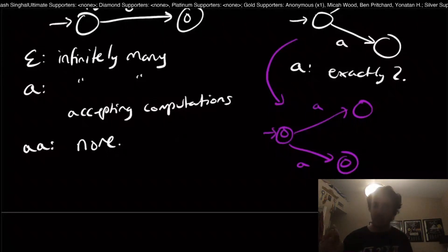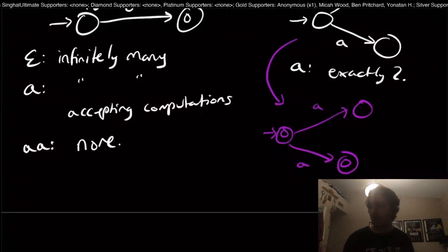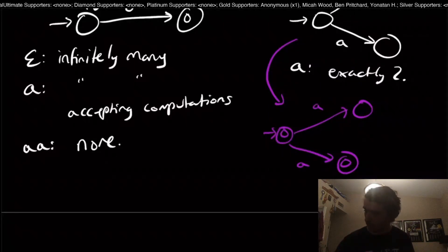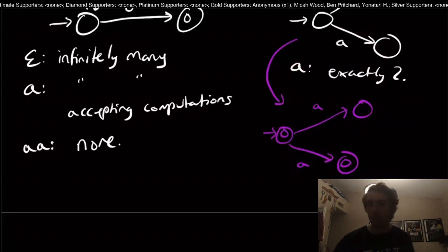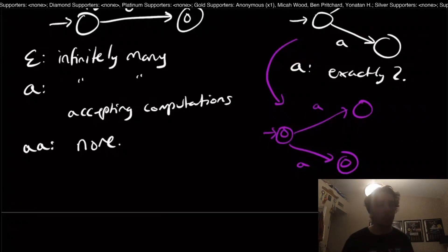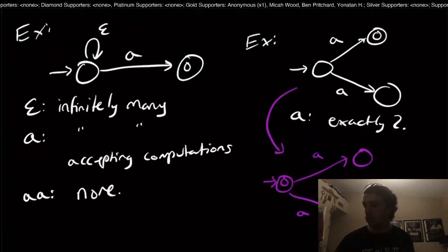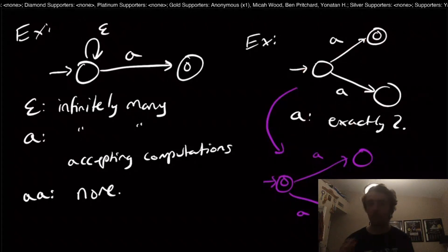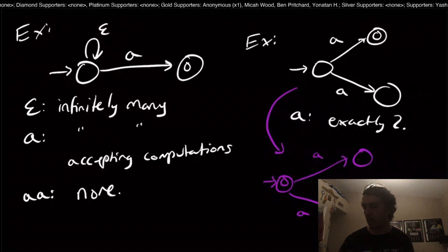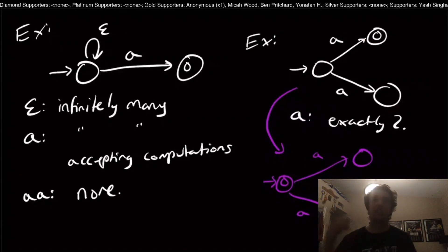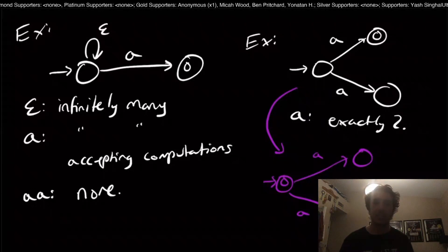You may be thinking, DFAs have closure in the complement and NFAs don't, so therefore, they cannot possibly be the same. But that's not true. Just because this particular conversion didn't work, flipping final states and whatnot, just because this idea doesn't work doesn't imply that some other NFA doesn't exist.